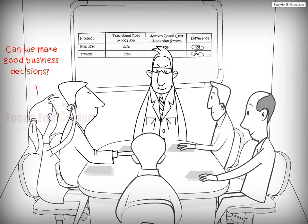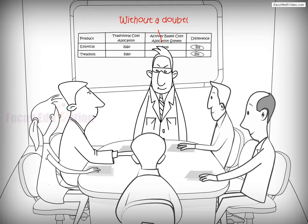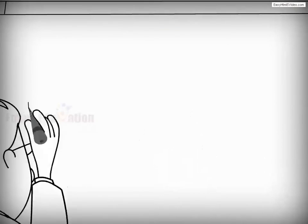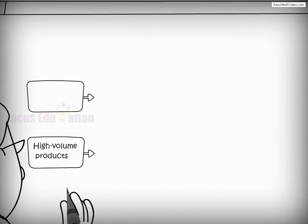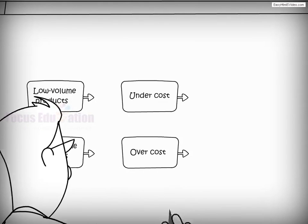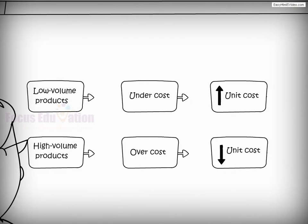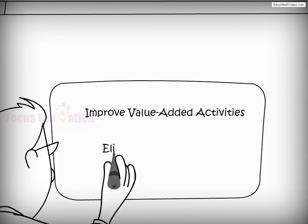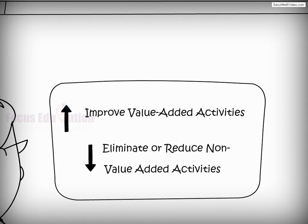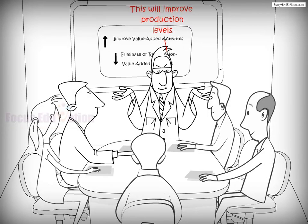Bearing this in mind, Life Fitness could now use activity-based costing information to make sound business decisions. They could re-evaluate the price charged for their high and low volume products. The managers realized that ABC tends to increase the unit cost of low volume products and decrease the unit cost of high volume products. Further, adopting the ABC approach helped in eliminating, reducing, or simplifying all non-value-added activities and examining whether value-added activities could be improved.